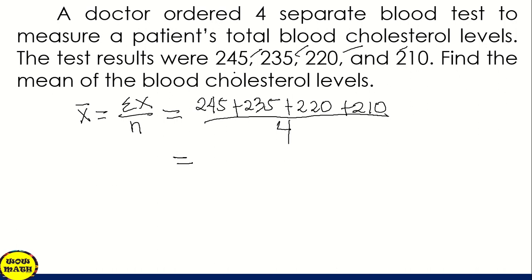And then add. So what is the sum? So again, 245 plus 235 plus 220 plus 210, that is equal to 910. And then divide by 4. So using your calculator, 910 divided by 4, that is 227.5.